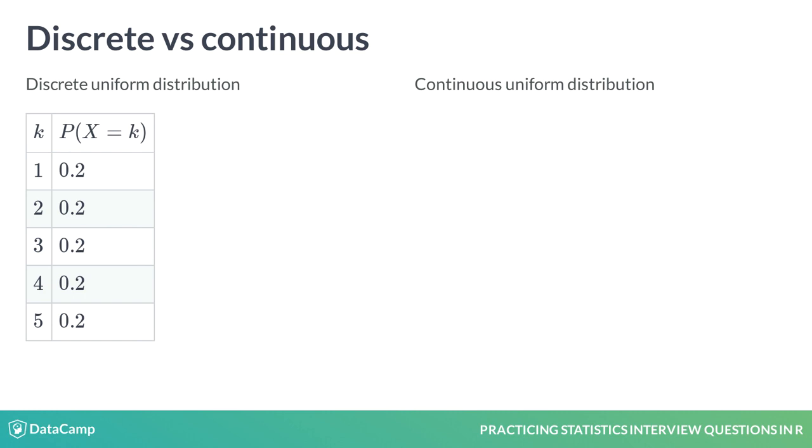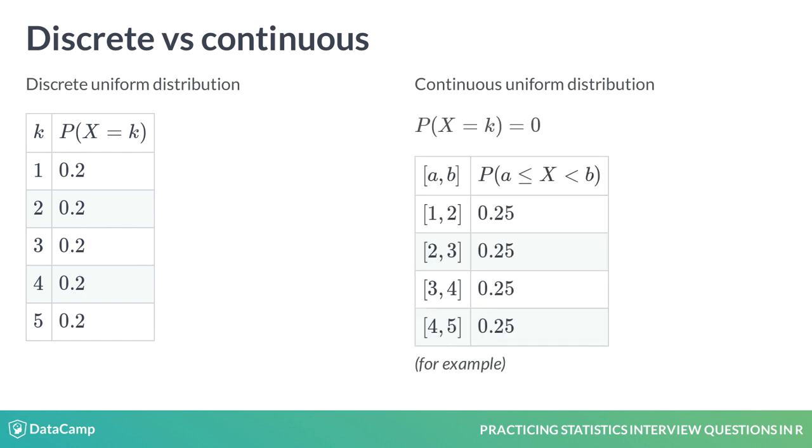There is a probability associated with obtaining each of the values. In a continuous distribution, a random variable can assume one of an infinite number of values. The probability of obtaining one specific value amounts to zero. We can calculate the probability that a continuous random variable lies within a range.